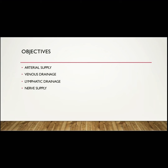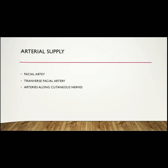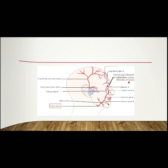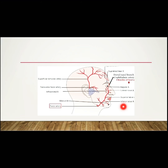Let's start with its arterial supply. The face is supplied by the following arteries: namely the facial artery, transverse facial artery, and arteries that accompany along the cutaneous nerves. The facial artery is the chief artery that supplies the face via four branches — namely the inferior labial artery supplying the lower lip area, and the superior labial artery supplying the upper lip area.